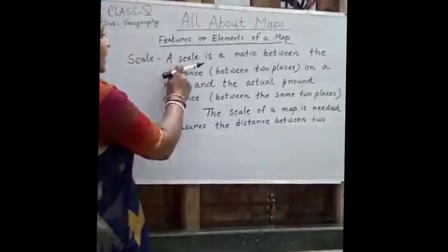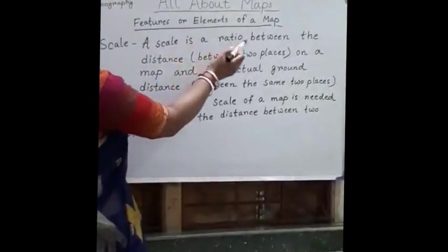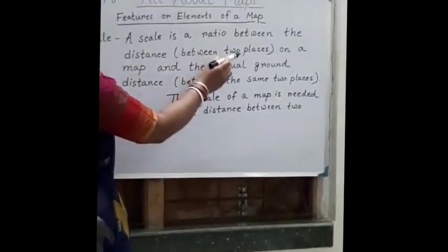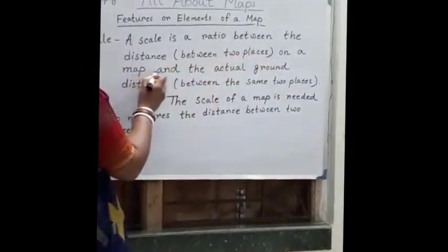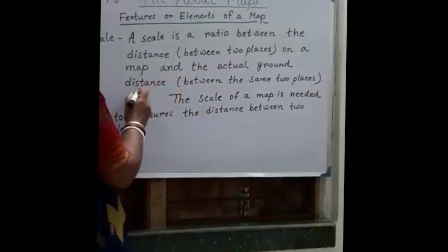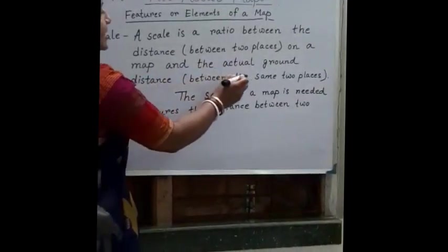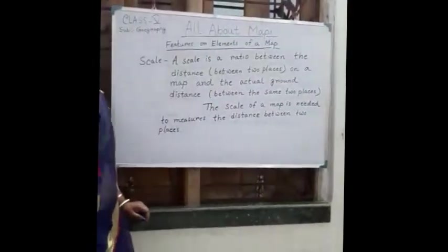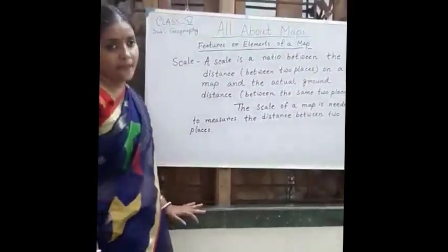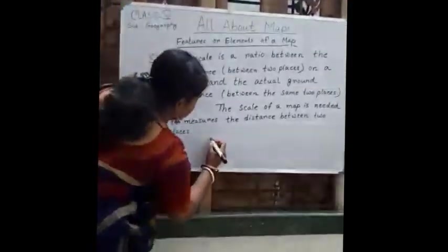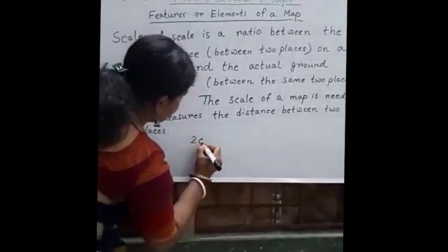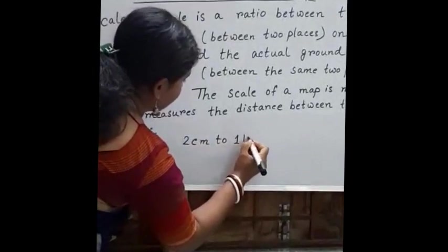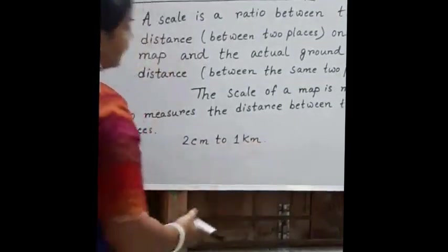So what is a scale? A scale is a ratio between the distance between two places on a map and the actual ground distance between the same two places. For example, if the scale of a map is two centimeters to one kilometer, that means two centimeters of the map is representing one kilometer on the ground.